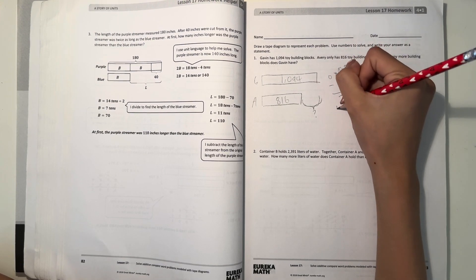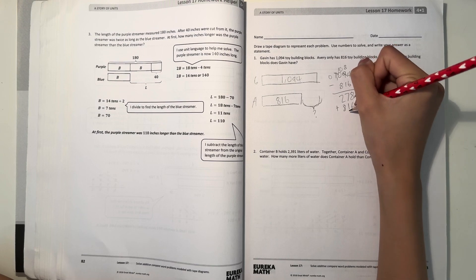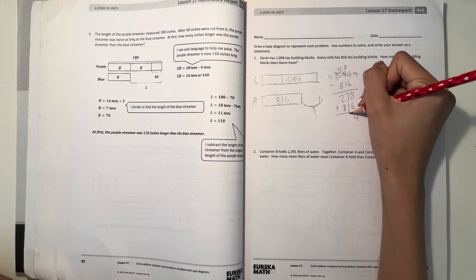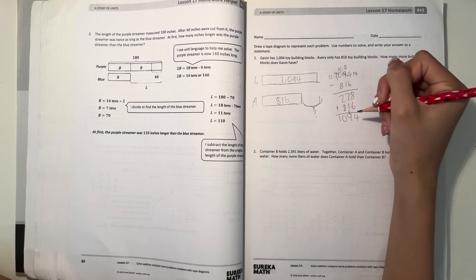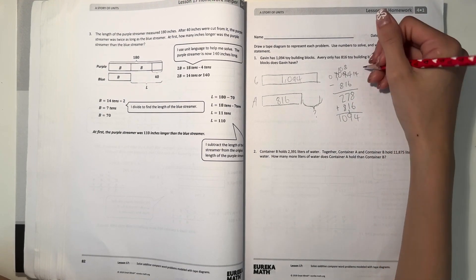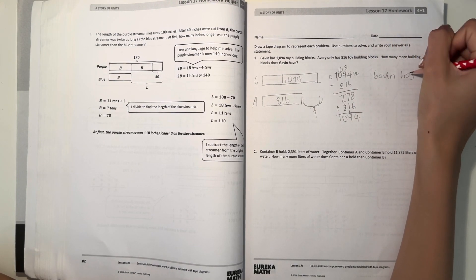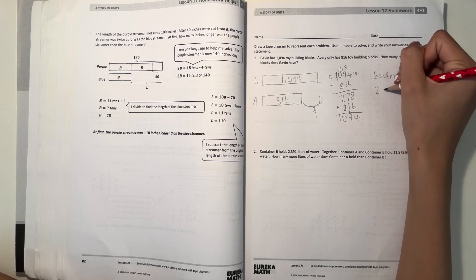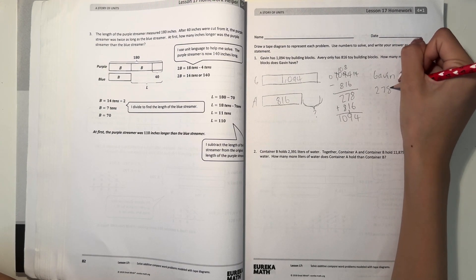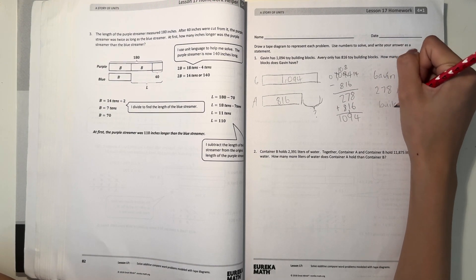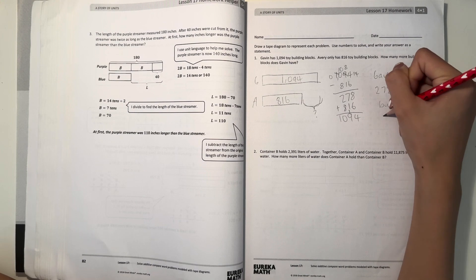And let's check our answer here. So we can add 816. So that would be 14, 9, and 10. So yeah. So that means Gavin has 278 more building blocks.